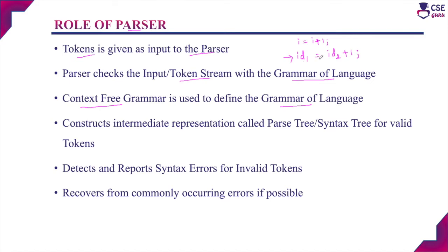Suppose instead of the equal sign, a semicolon is placed there. If this token stream is given as input to the parser, the parser will verify the token stream, find a syntax error present in it, and confirm it as an invalid token stream. So it cannot construct the parse tree with the help of this invalid token stream.